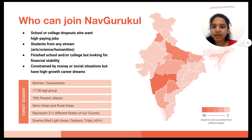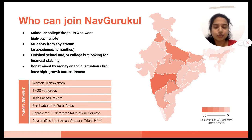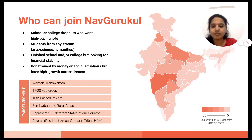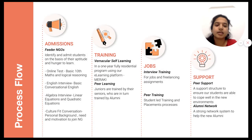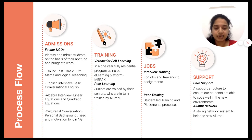I will tell you the minimum criteria again. It is 10th standard pass and your age should be between 17 to 28 years, and students from rural and semi-urban areas can join. If you fall under the above discussed criteria, you have to give 4 rounds of admission test to join Navgurukal.